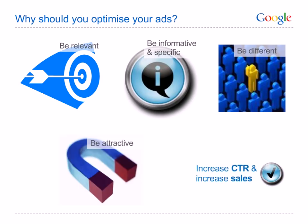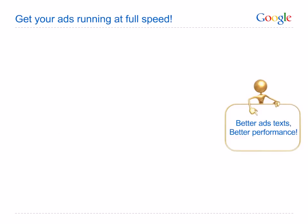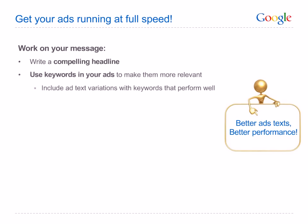Be attractive — writing compelling ads with an attractive offer will attract the user's attention. Writing compelling ads and attracting the right users will have a positive impact on your click-through rate and your sales. Work on your message — write a compelling headline, as an ad's headline is usually the first thing a user sees. It appears as a link in blue underlined text, making it an important piece of your ad to get right. Make sure to adapt your ad texts by using the keywords that will trigger the ad in the ad itself.